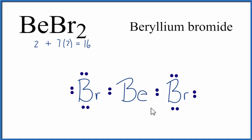The beryllium, however, only has 4 valence electrons. Beryllium is an exception to the octet rule. It actually needs only 4 valence electrons.